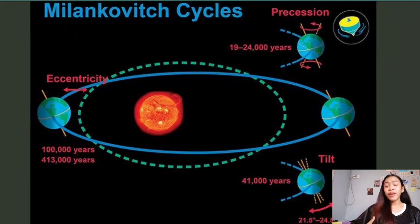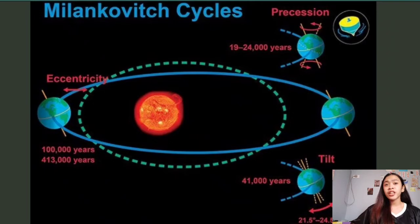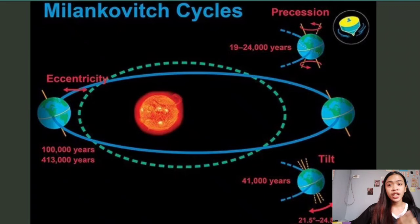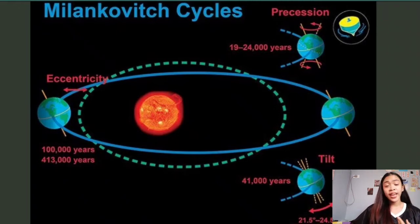Our lives literally revolve around cycles — series of events that are repeated regularly in the same order. There are hundreds of different types of cycles in our world and in the universe. Some are natural, such as the change of the seasons, annual animal migrations, or the circadian rhythms that govern our sleep patterns. Others are human-produced, like growing and harvesting crops, musical rhythms, or economic cycles.